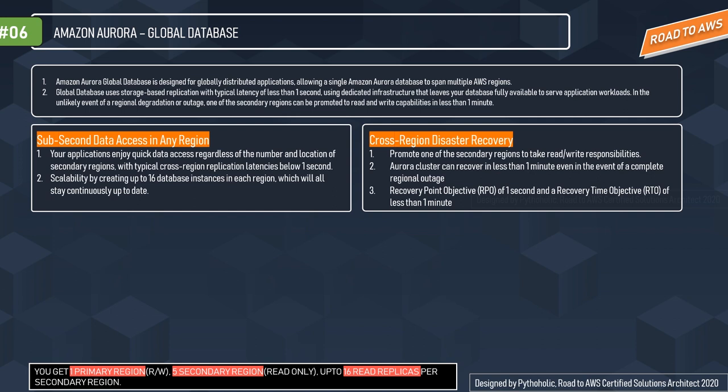RTO — recovery time objective — is the target time you set for the recovery of your data and infrastructure after a disaster has struck. For example, if your company says your application can survive a failure time of 10 minutes, you need to ensure your data and infrastructure is back up within that time limit. In Aurora Global Databases, the RTO is less than one minute.